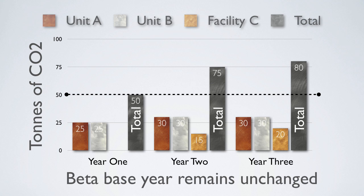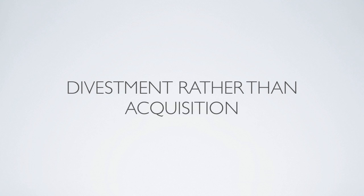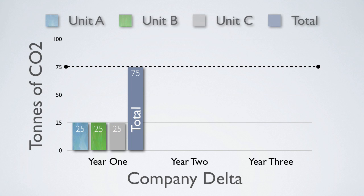Before we move on, we are going to look at one more example — a divestment rather than an acquisition. As you might guess, the procedures for recalculating base year emissions for a divestment are essentially opposite of those for an acquisition. In this example, Company Delta consists of three business units A, B, and C. In year one, each business unit emits 25 tons, making the total emissions 75 tons in the company's base year.